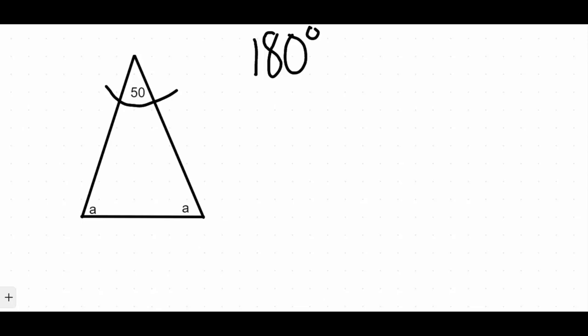Now typically when we're finding the missing angle of a triangle, typically we're given two out of the three angles. So if we're given two of the angles, we're able to subtract those two angles from 180 degrees to find the third angle. And if we're looking at the problem that we have here, I only have one angle.